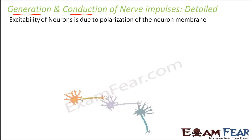Now, excitability of neurons — that is the main reason why this entire process can take place. The excitability of neurons is due to the polarization of the neuron membrane. The concept of polarization comes into picture whenever there is a difference in charge. Whenever one region has a lot of positive charge and the other has a lot of negative charge, a potential difference exists between the two regions, and that region is said to be polarized.